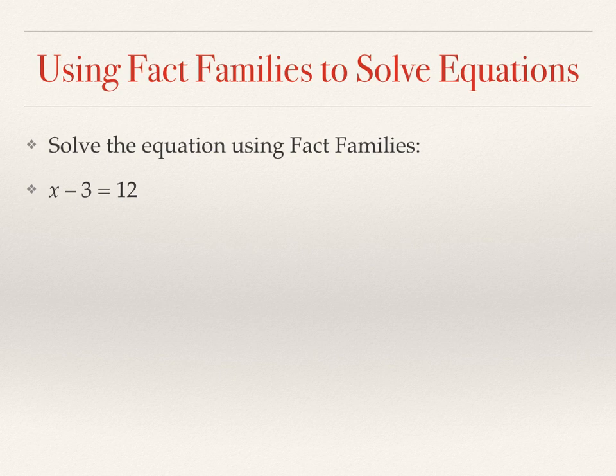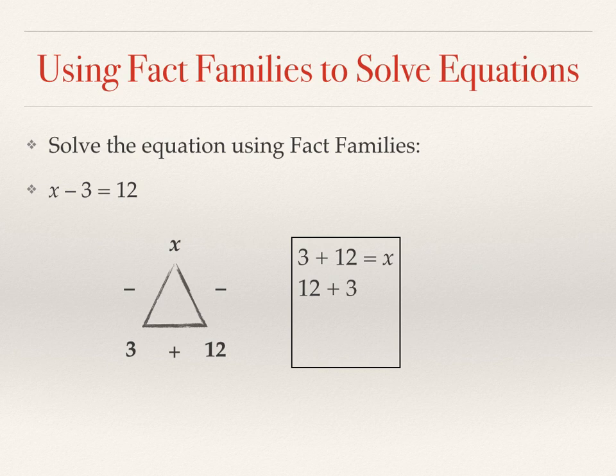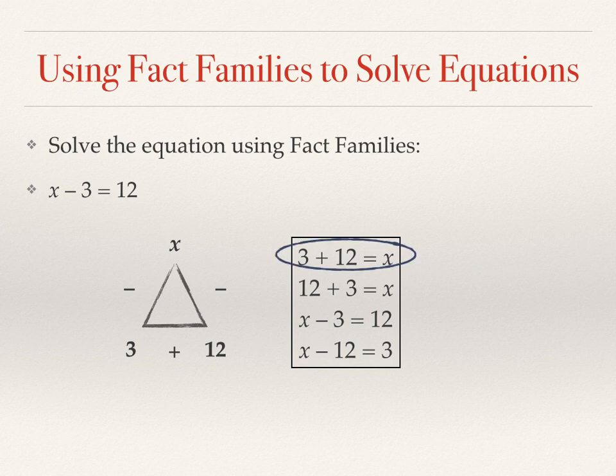All right, we have a subtraction equation. So in the fact triangle, the addition goes at the bottom, the two subtraction signs along the side. Let's put x at the top, 3 in the bottom left and 12 in the bottom right. And let's write our four equations. Either of the top two would solve for x directly. And so the solution is x equals 15.